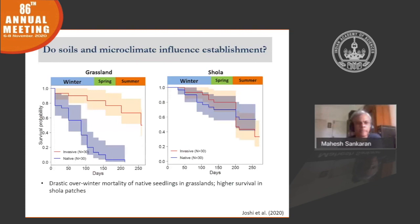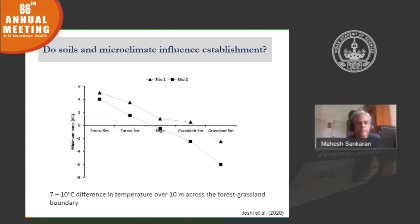There is drastic over-winter mortality of native seedlings in the grasslands, and the obvious driver here is temperature. We measured temperature across this gradient. This graph shows how temperatures change from five meters inside the forest, across the boundary, and into five meters of the grassland. These are minimum temperatures, and over this 10-meter gradient we see almost a 7 to 10 degree difference. Inside the forest, temperatures rarely go below zero, whereas in the grasslands, temperature consistently falls below freezing in winter. This suggested that temperature is the driver, so we set out to manipulate temperatures to see what happens.